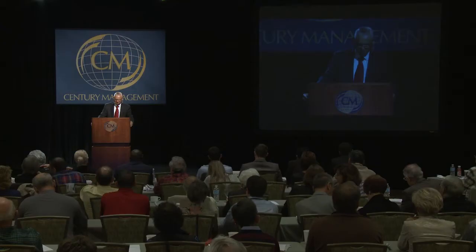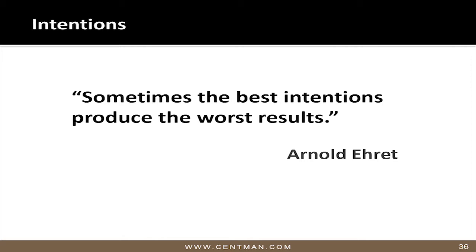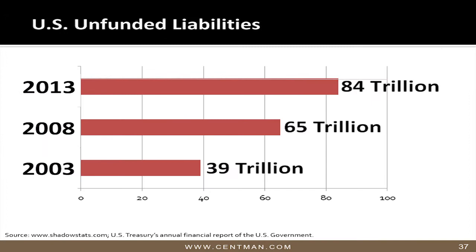A lot of people feel the way to solve this is to raise taxes, especially on the wealthy. Let's look at whether that's realistic. The top 1% make $1.5 trillion and pay $354 billion in taxes — 37% of all taxes. If you doubled their taxes and paid it all to the unfunded liabilities, it would take 200 years to pay it off. And if you doubled the taxes on corporations, which pay $418 billion, it would take 237 years to pay it off. Obviously, raising taxes is not going to solve the problem — it's a Band-Aid.